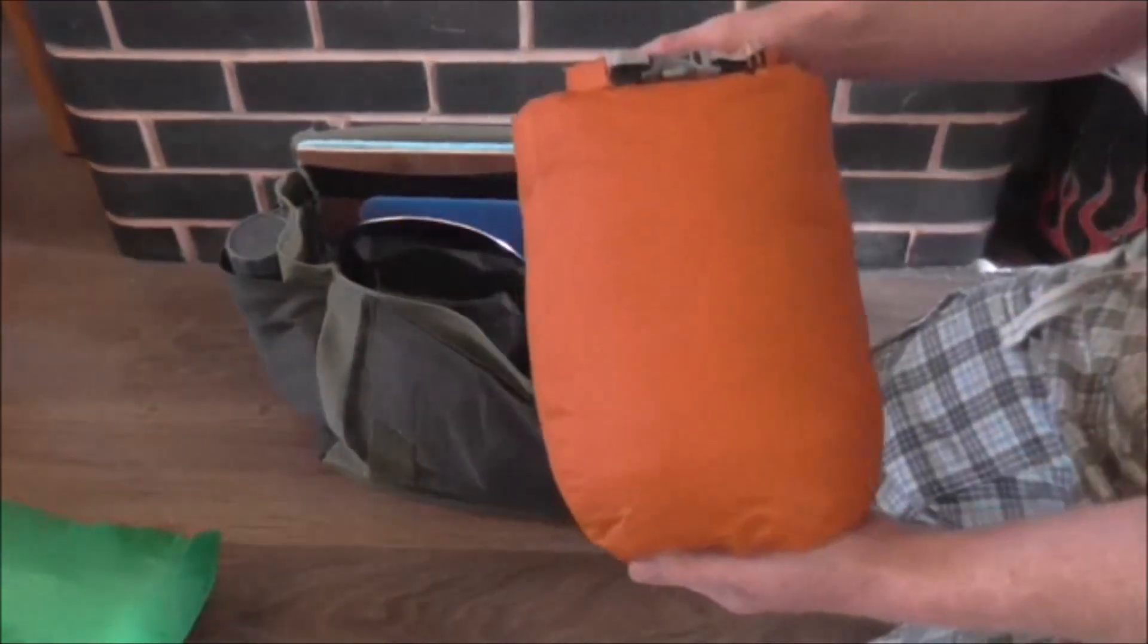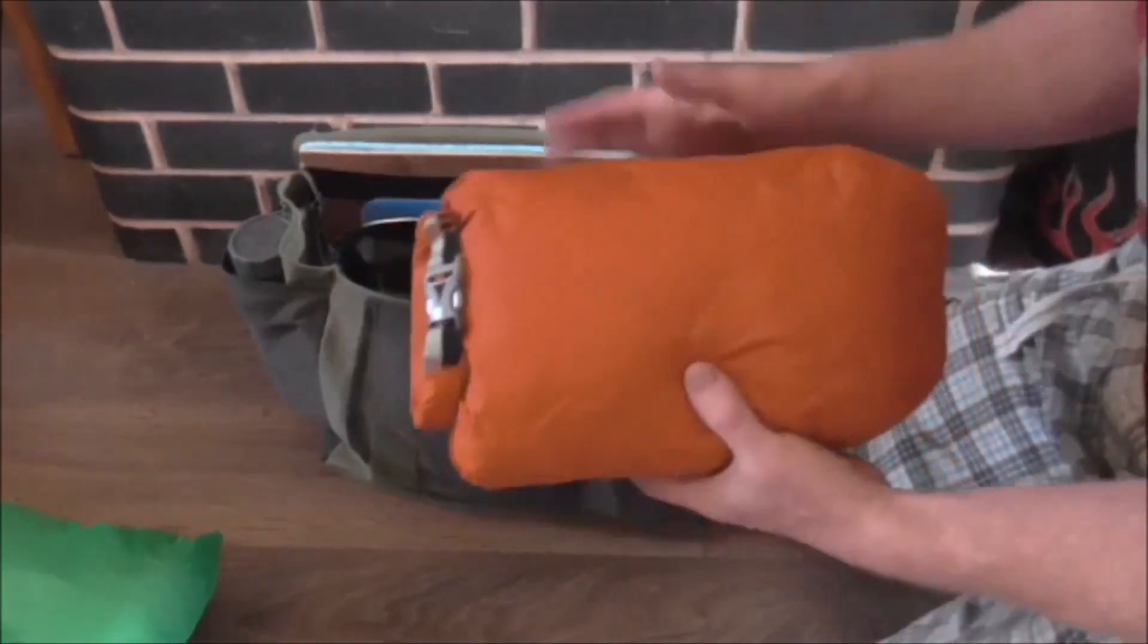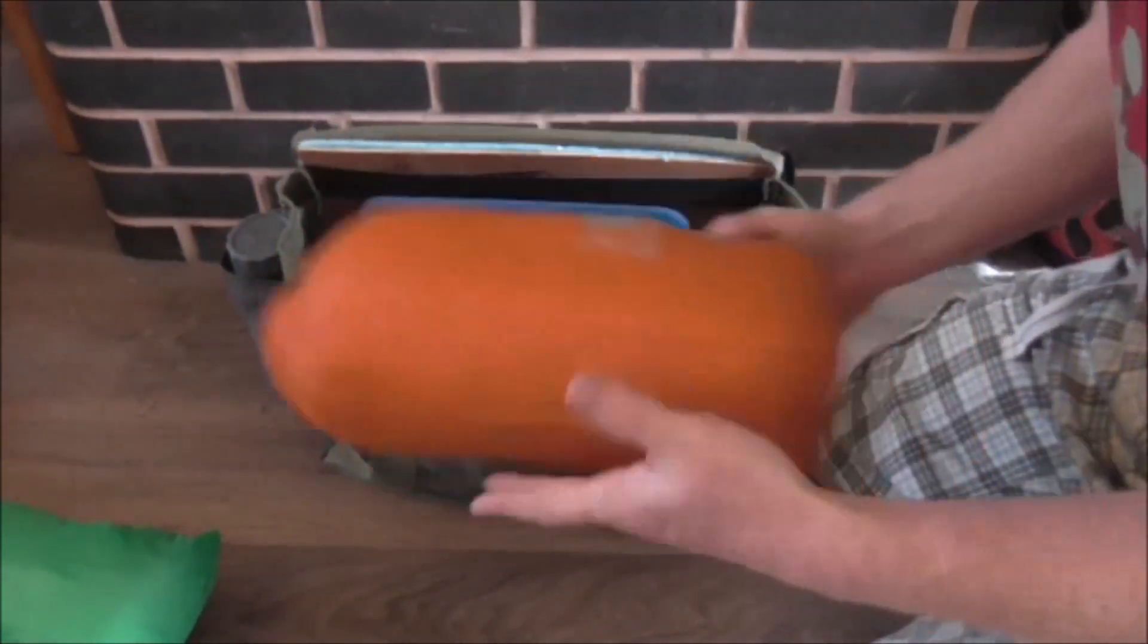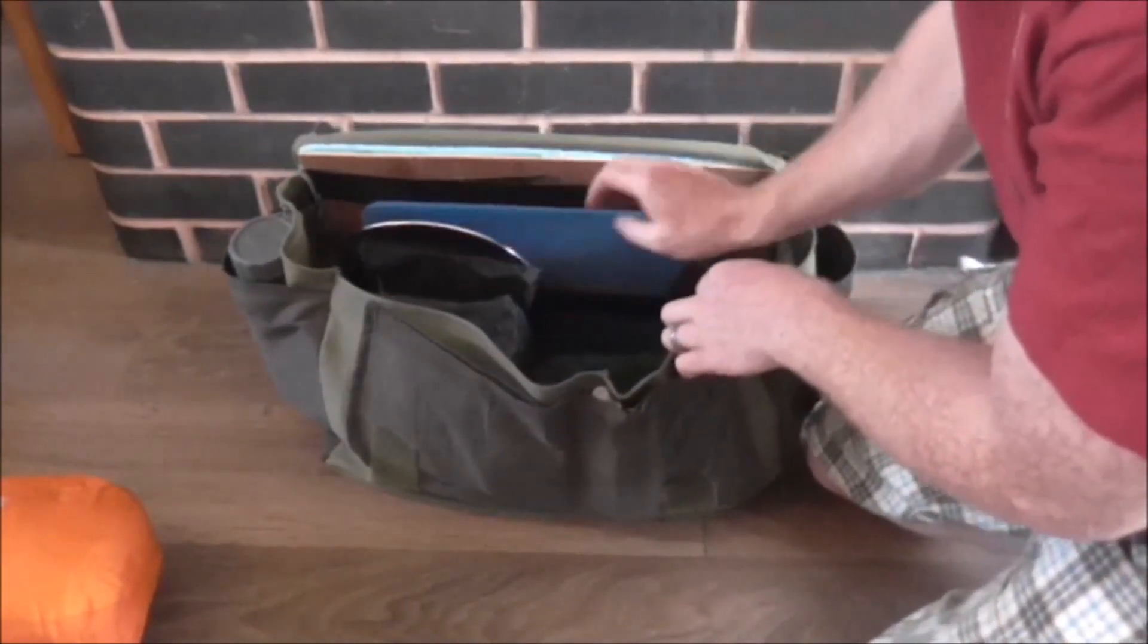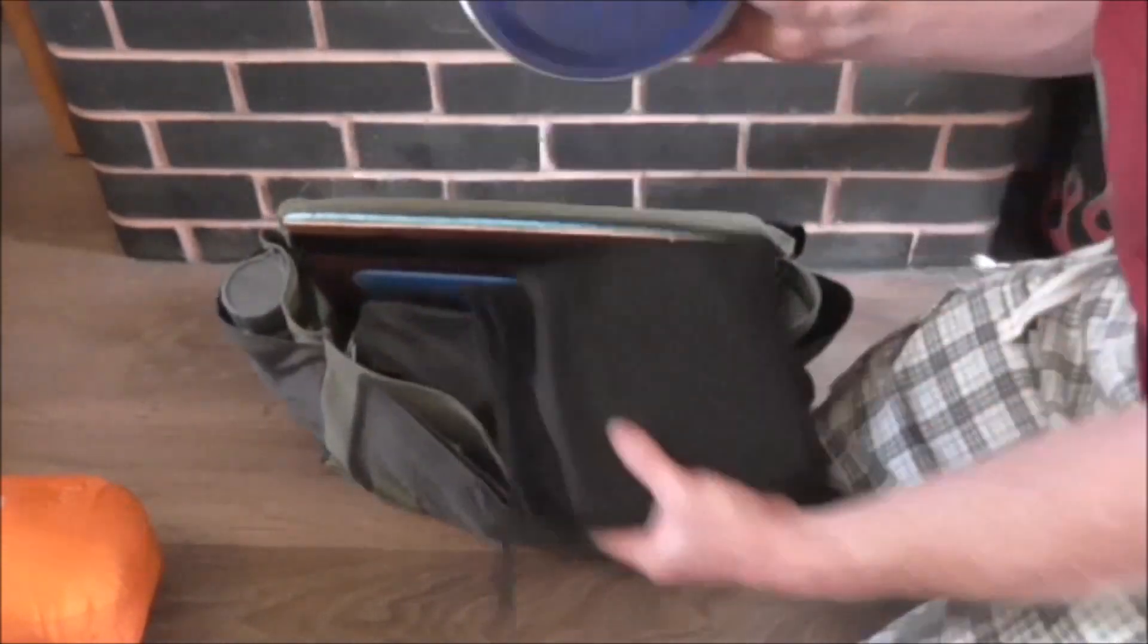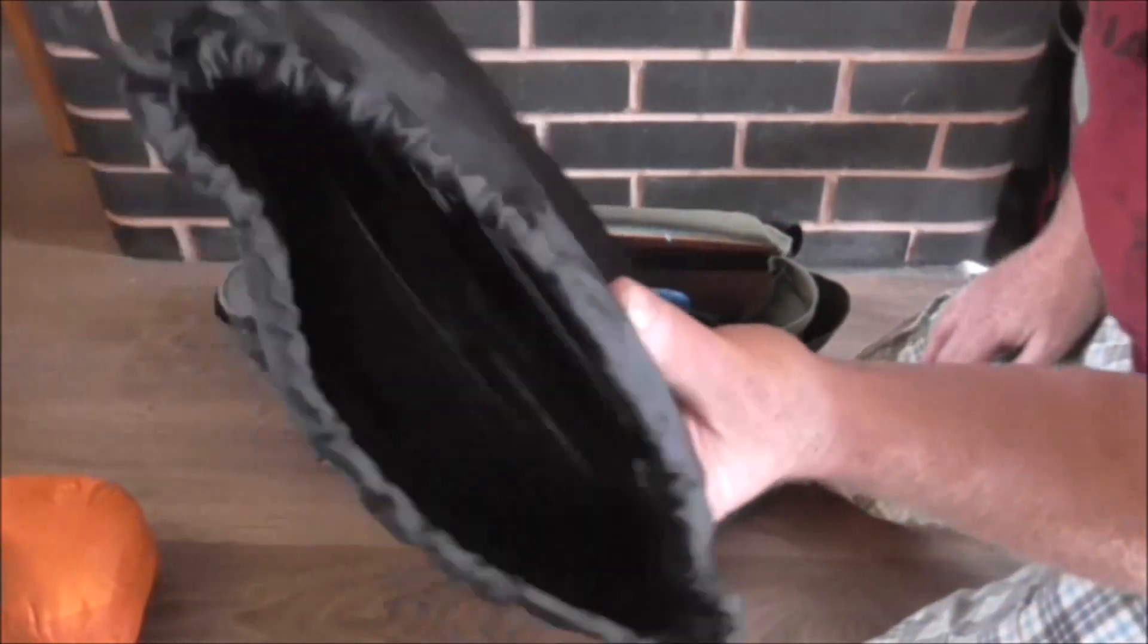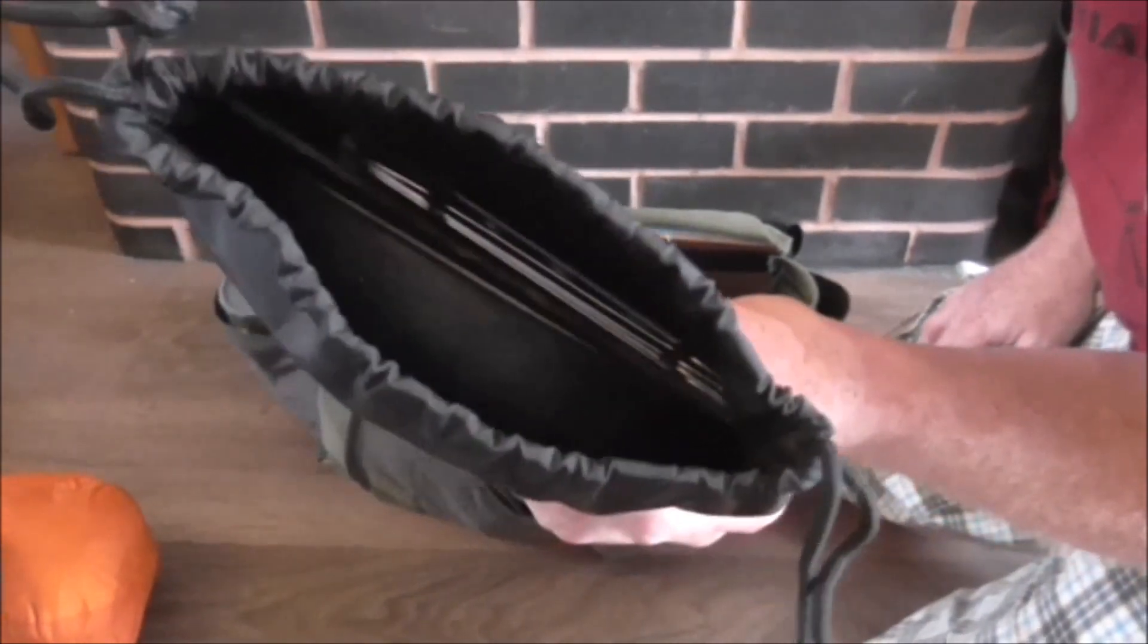This is the military sleep system patrol pack. That squishes down nice in there and it will keep that dry before it goes into the bivvy bag. We've got a plate. And this is the little fold up bush box and a titanium frying pan plate in there as well.